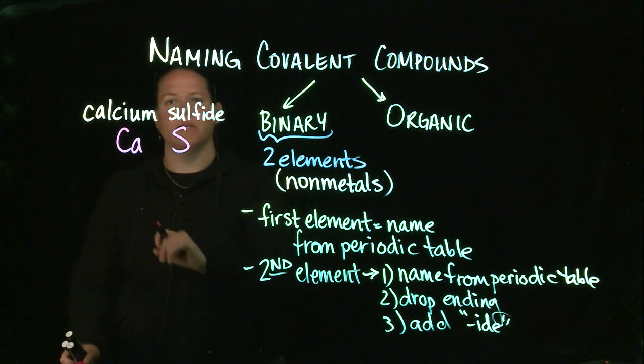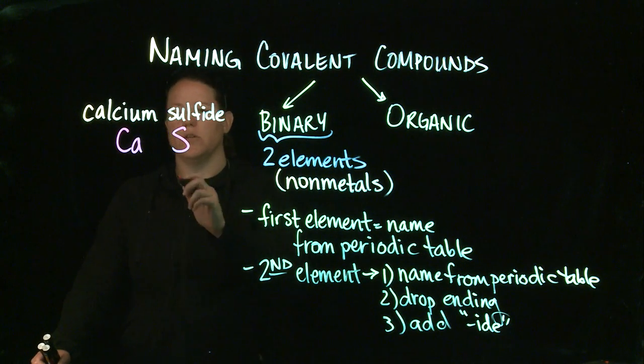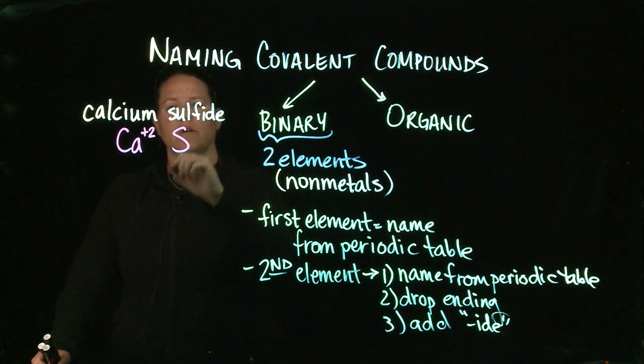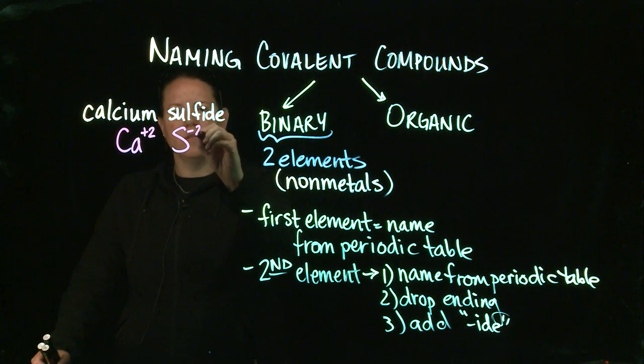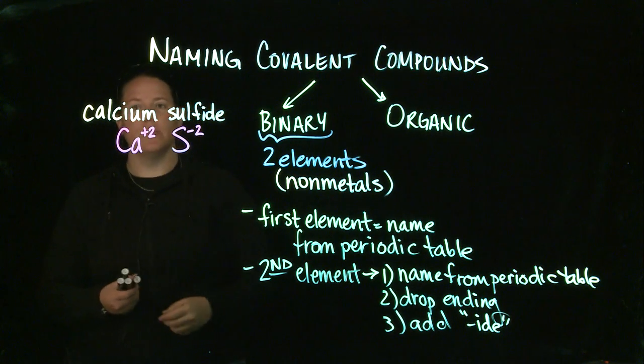So you look up those two. Those are both in the tall parts of the periodic table, groups one and two, and 13 through 18. So we should know what these charges are. Calcium is in group two so it gets a plus two. Sulfur is in group 16 so it gets a minus two.